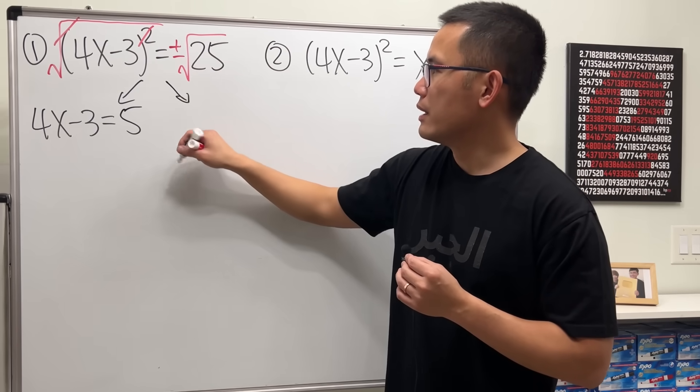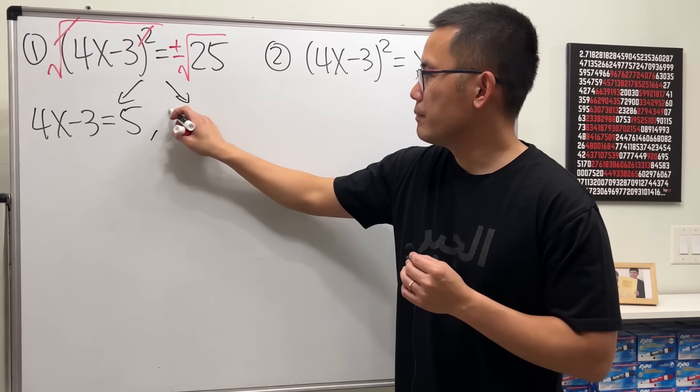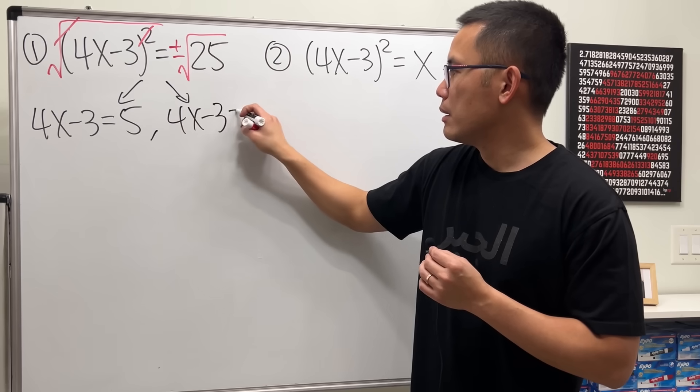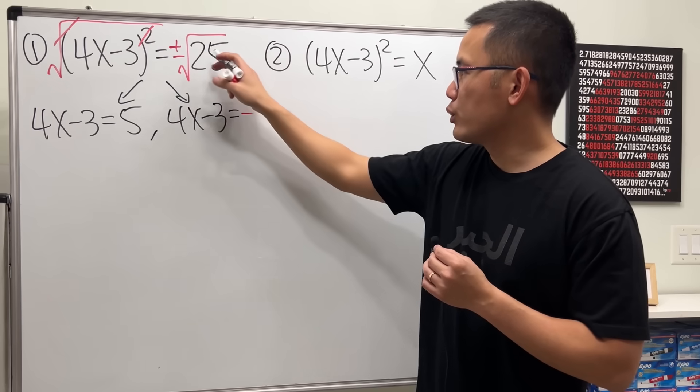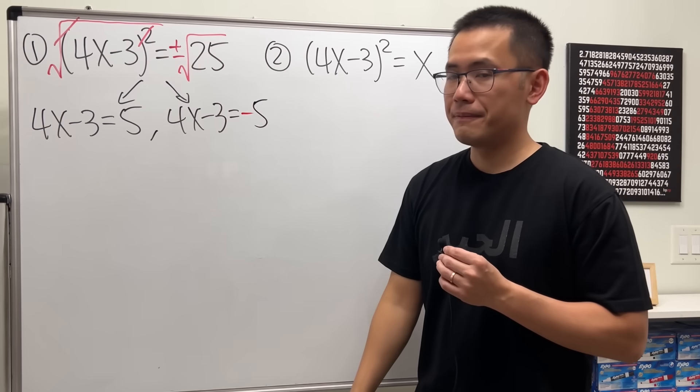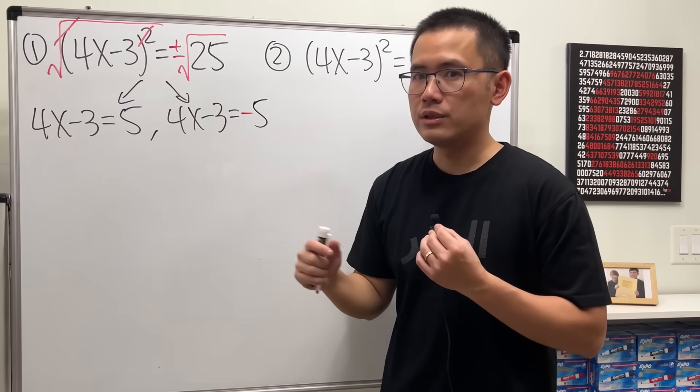Now, for the second one, the inside stays the same. But you will have the minus here and then square root of 25, which is 5.